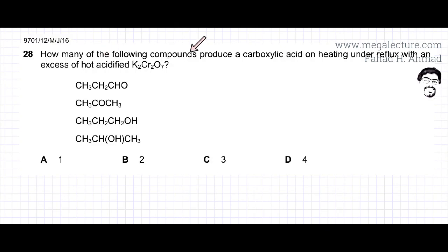The following question reads: how many of the following compounds produce a carboxylic acid on heating under reflux with an excess of acidified K2Cr2O7? You're basically doing oxidation. Here's your oxidizing agent.